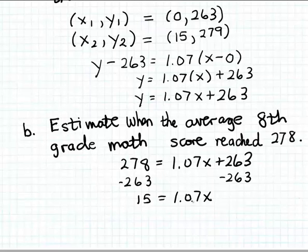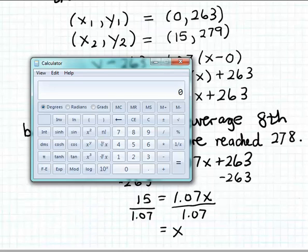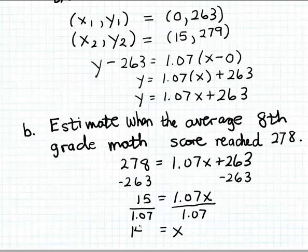And now to finish isolating x on the right-hand side of the equation, I'm just going to divide both sides by that coefficient of x, which is 1.07. So we get that x is equal to 15 divided by 1.07. Let me use my calculator to estimate that quotient. So 15 divided by 1.07, and that turns out to be approximately 14.02.